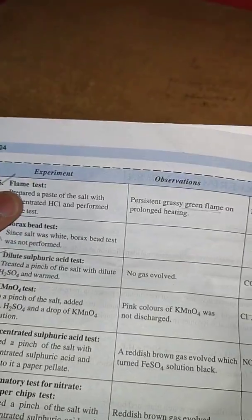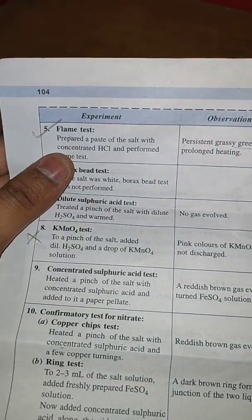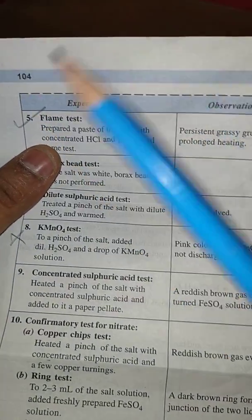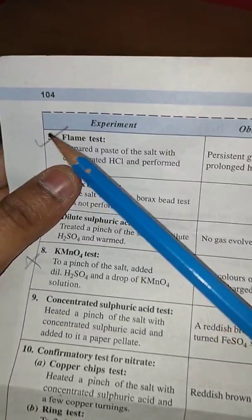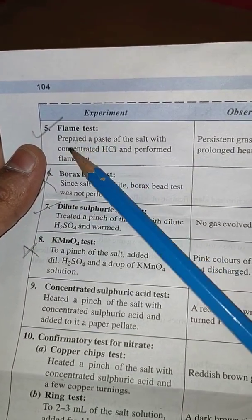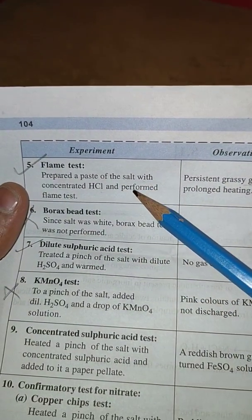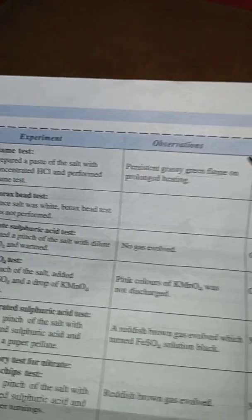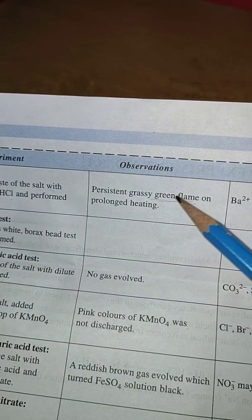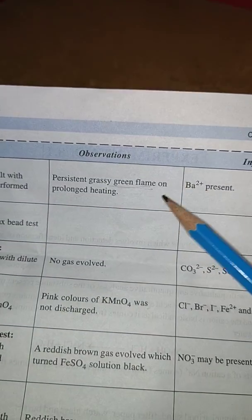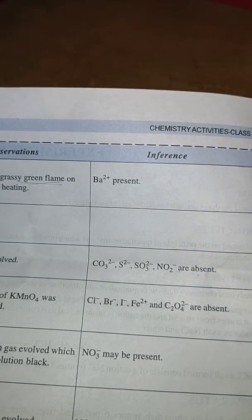Now come to the next part: flame test. In the dry heating you have to put the salt inside the test tube and close to the burner. In the flame test, prepare a paste of the salt with concentrated HCl and perform flame test. Persistent greasy green flame on prolonged heating, so it may be Ba²⁺ present.